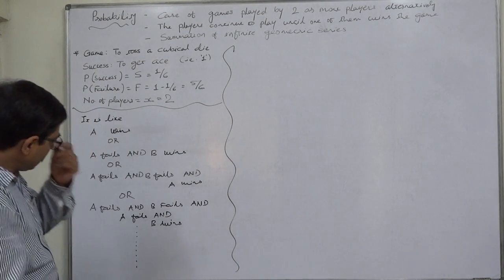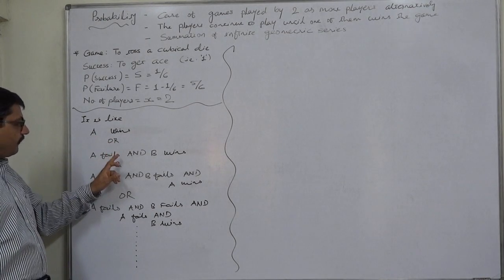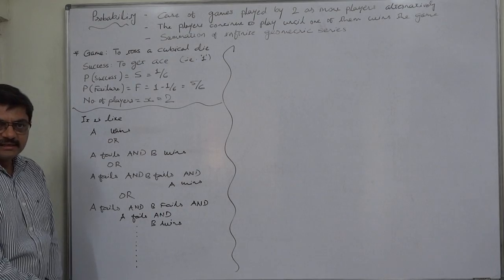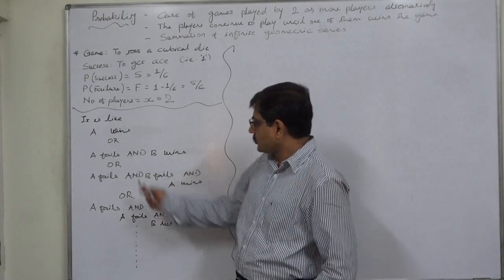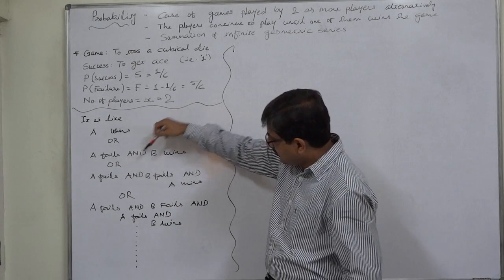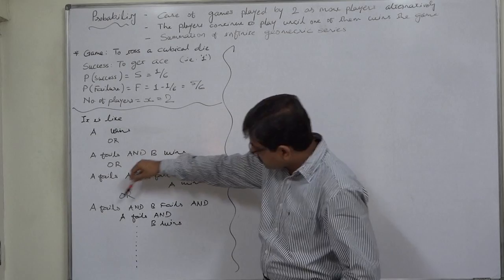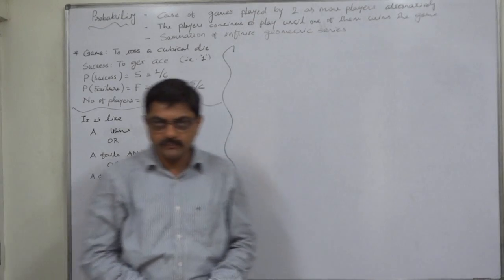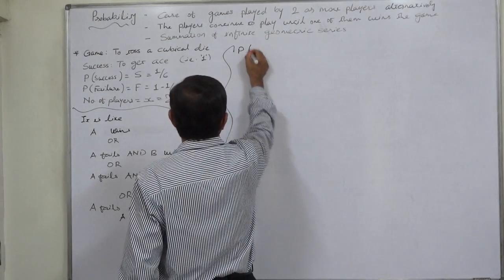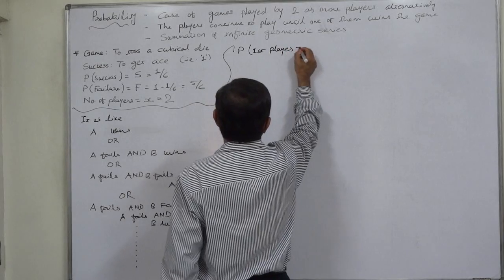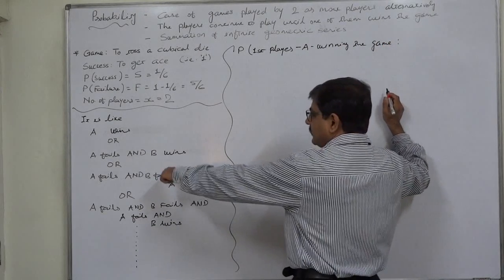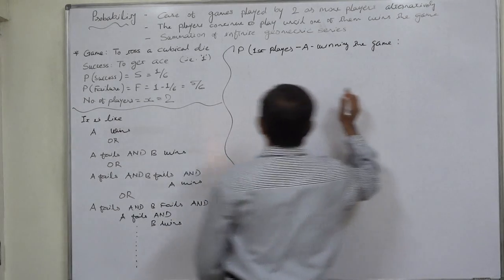Considering all these possibilities: S, or F·S, or F·F·S, or F·F·F·S, and so on — it is the case of summation. It will be S + F·S + F²·S + F³·S and so on. To sum up the entire thing, the probability of the first player — A here — winning the game, because of the summation of an infinite geometric series, is given by a formula.